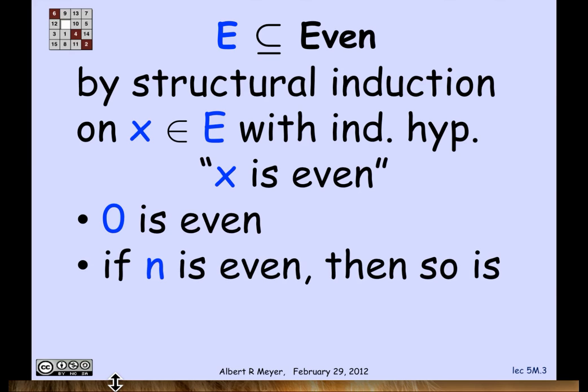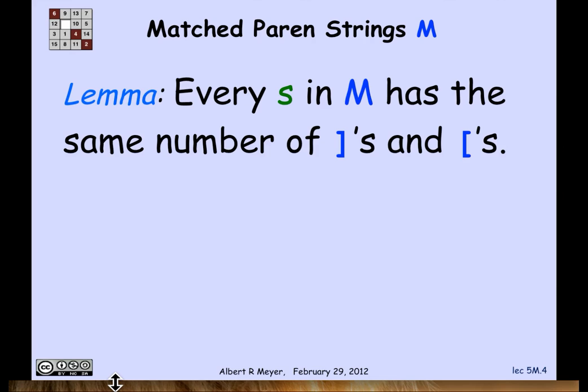Then we need to show that assuming the structural induction hypothesis that n is even, when we apply the constructor n+2, it's even—which obviously it is. Or if we apply the constructor -n, that's also even, and it is. That's why structural induction tells us that every element in set E is even.